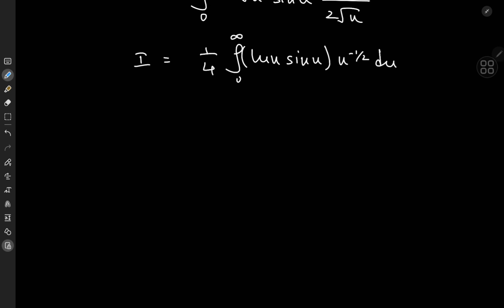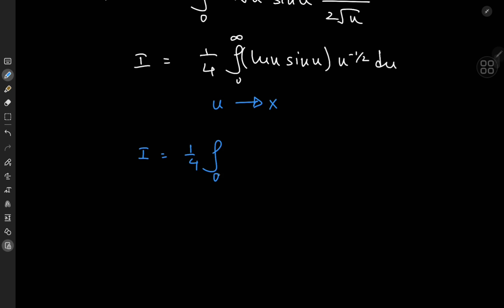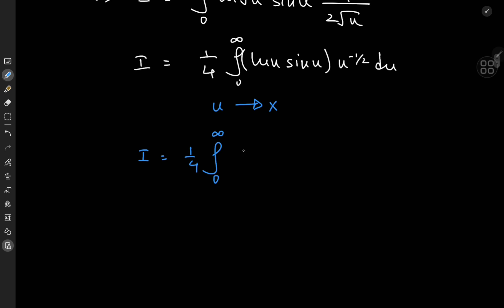This can be written as one half times the integral from zero to infinity. But wait — log(√u) can be written as one half of log(u). So that means instead of one half outside, I have a quarter. So we have (1/4) times the integral of log(u)·sin(u)·u^(−1/2) du. Now I'd like to rename the dummy variable back to x, because that doesn't alter the structure of the integral. We have the integral of x^(−1/2)·sin(x)·log(x) dx.